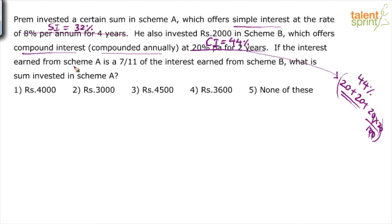Now, if the interest earned from scheme A is 7 by 11 of the interest earned from scheme B, which means 32% of the principal that was invested here is 7 by 11 of the interest that has been earned here. What is the sum invested in scheme A? So the whole question is about sum invested in scheme A.